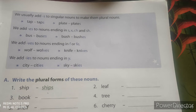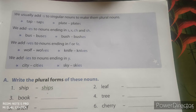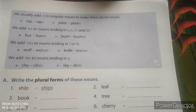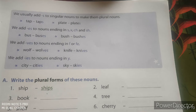जैसे tape — tapes, nail — nails, plate — एक plate के बारे में बताया गया है और plates बहुत सारी plates हो जाएंगी. And then we add 'es' to nouns ending in 's', 'x', 'ch', and 'sh'.